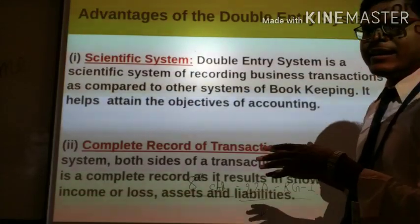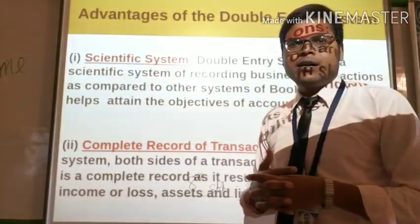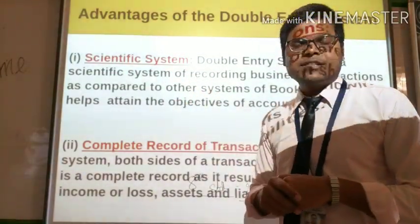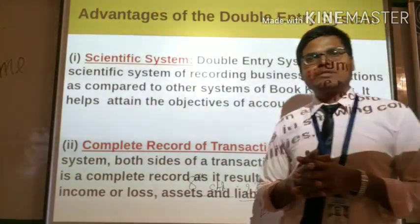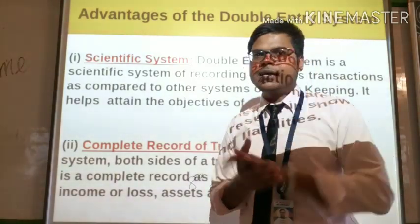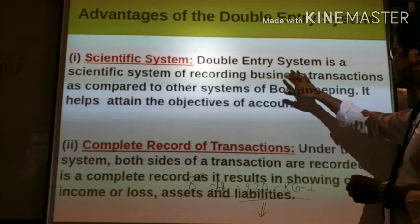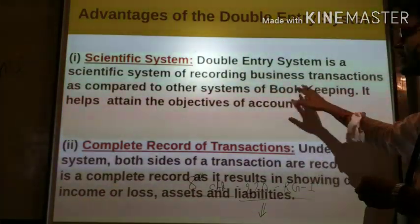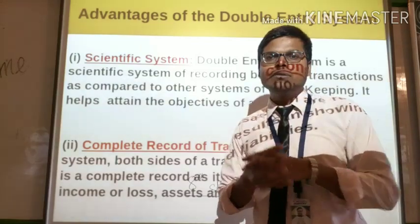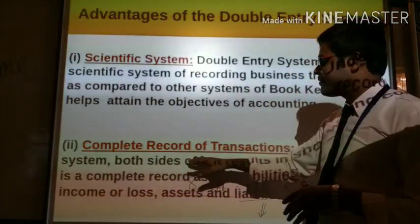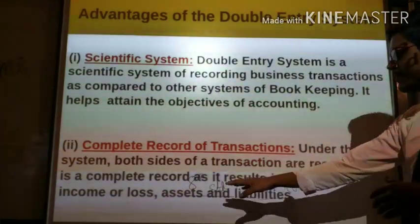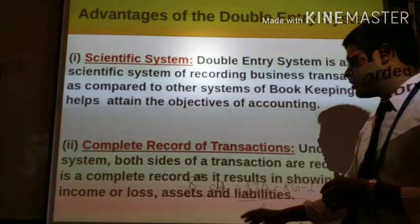Now, what are the advantages of the double entry system? First is that it is a scientific system of recording business transactions. Under this system, both sides of a transaction are recorded. It is a complete record as it results in showing correct income or loss, assets and liabilities.